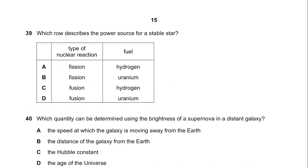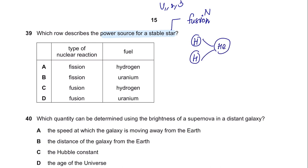Question 39. Which row describes the power source for a stable star? This question was also asked in all variants 1, 2, and 3. To power a stable star, nuclear fusion occurs whereby two hydrogen atoms fuse to form a helium atom at an extremely high temperature—only achievable in the Sun. The type of nuclear reaction is fusion and the fuel is hydrogen. So the answer is C.